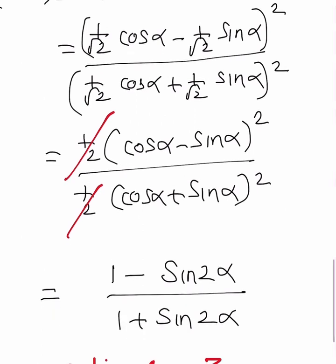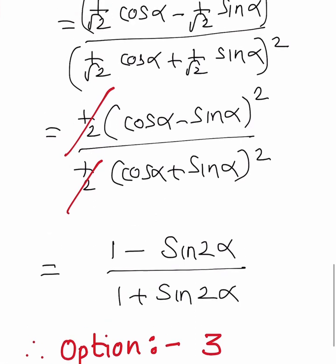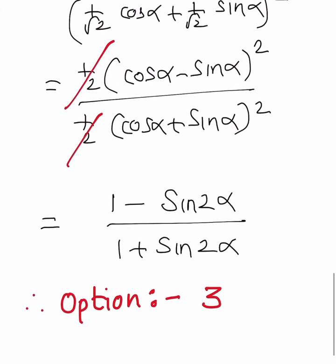Both numerator and denominator, it got cancelled, and in the numerator cos alpha minus sin alpha square divided by cos alpha plus sin alpha square.